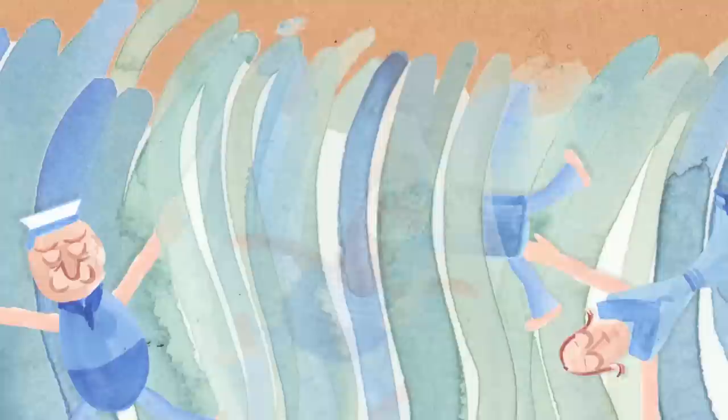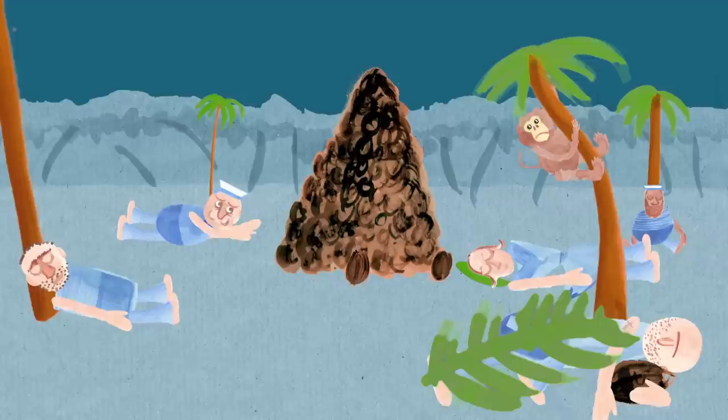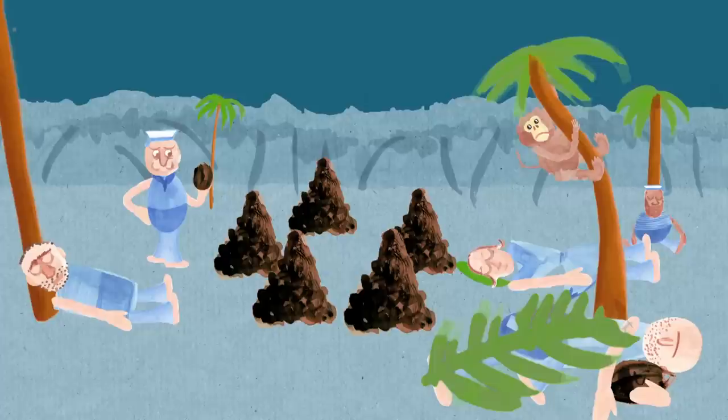So basically, the story goes that you've got five sailors, and they're shipwrecked on a desert island, and there's a monkey as well. And they go around and they collect a bunch of coconuts, and then they go to sleep. In the middle of the night, one of them wakes up. He's looking at the coconuts. He thinks there's going to be trouble in the morning. So he goes over and he starts separating them out among the five sailors. And then there's one left over. He chucks it to the monkey who's watching the whole thing. He stashes his pile, hides it, and then puts the rest together, puts it back in the middle.